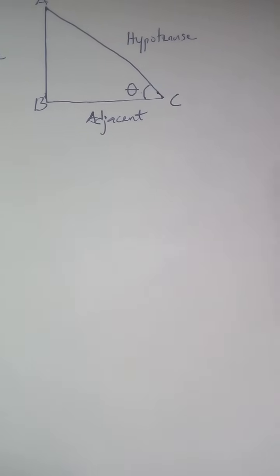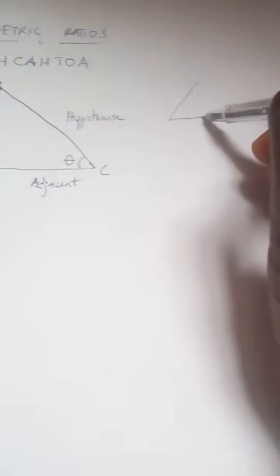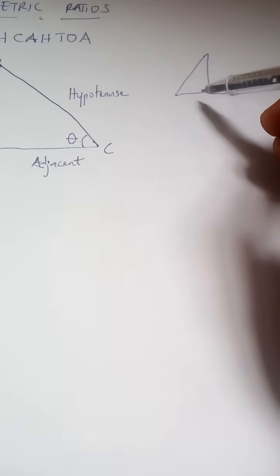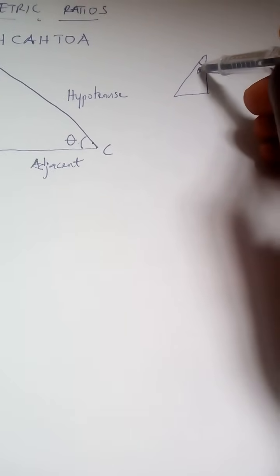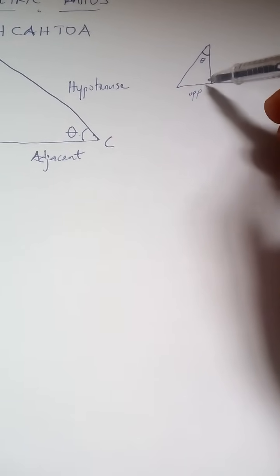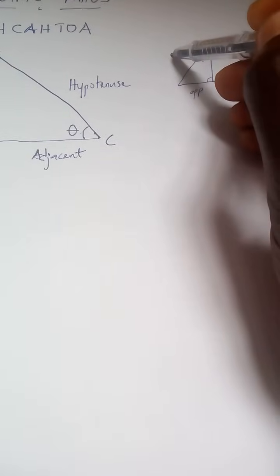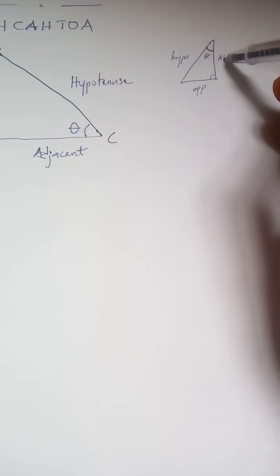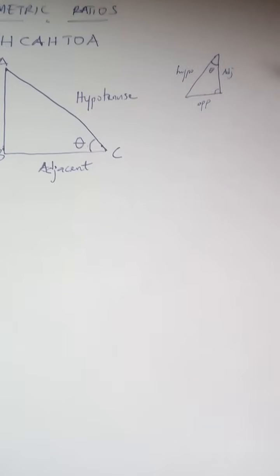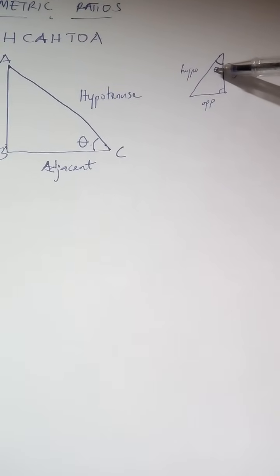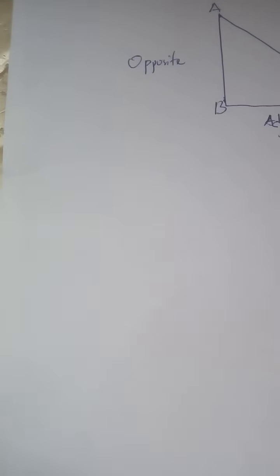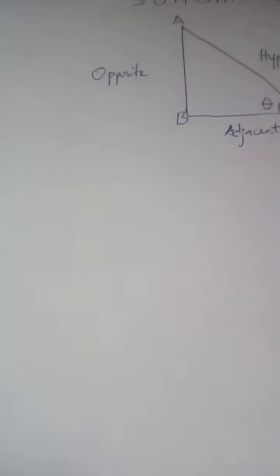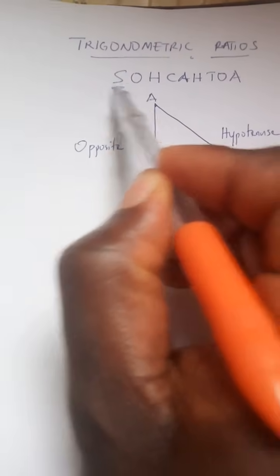Take note: this diagram can be flipped — it doesn't have to be like this all the time. The diagram could take different forms. If this becomes the given angle, automatically this becomes your opposite. Because this is the longer side, this becomes your hypotenuse, and the last side becomes your adjacent. Just take note of where your given angle is.